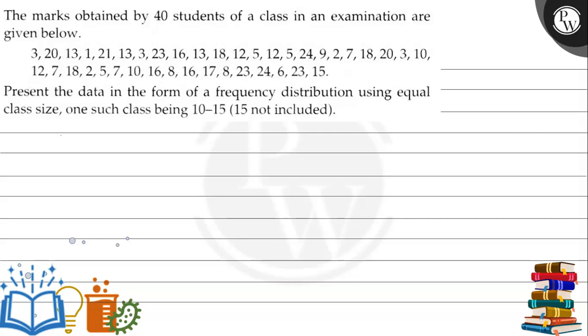Hello, let's read this question. The question says the marks obtained by 40 students of a class in an examination are given below. Present the data in the form of a frequency distribution using equal class size, one such class being 10 to 15.